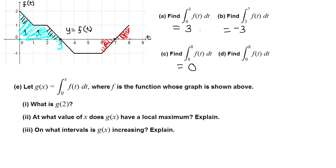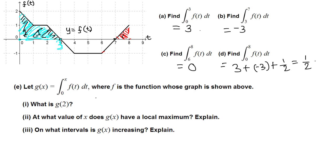For the integral from 0 through 8, we combine all parts. From 0 through 3 (part a) we have 3, plus from 3 through 7 (part b) we have negative 3, plus from 7 through 8 which is just half. The positive 3 and negative 3 cancel, so the result is one half.